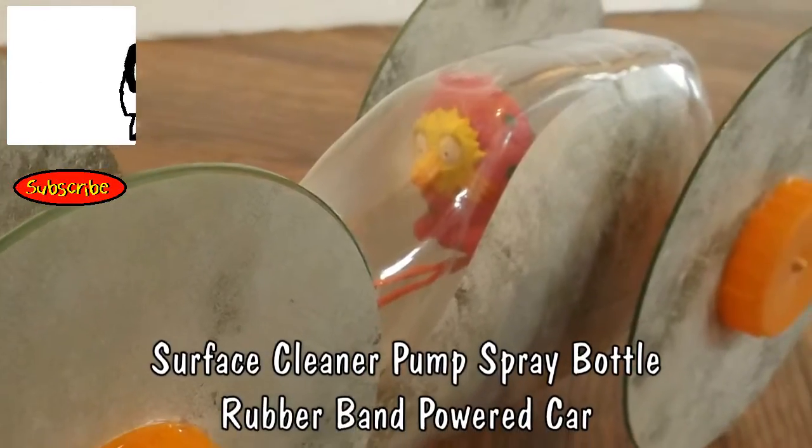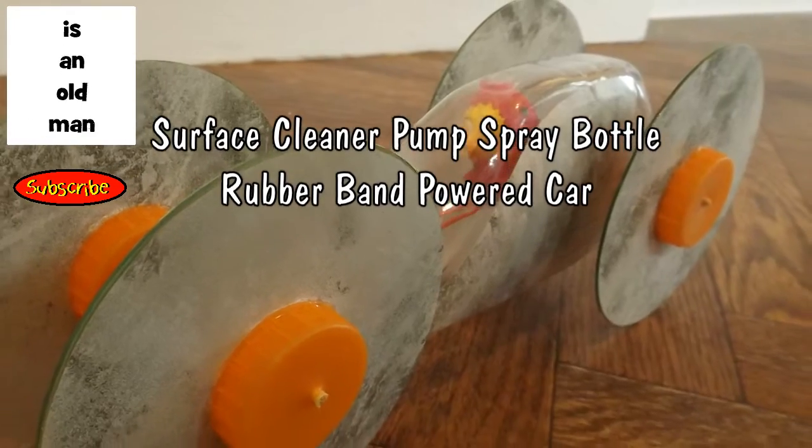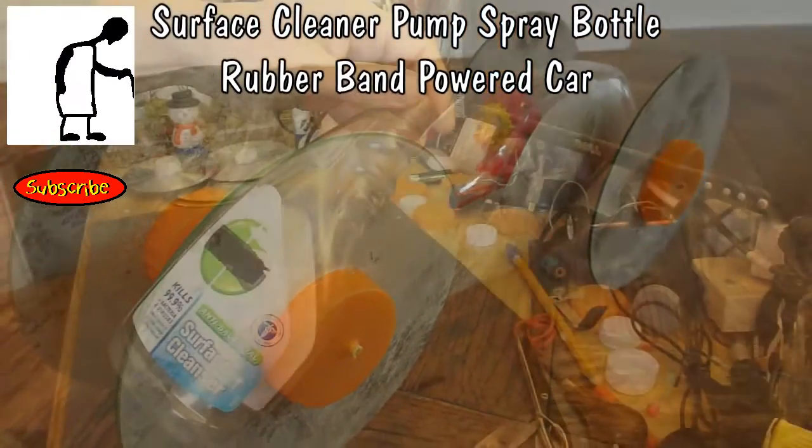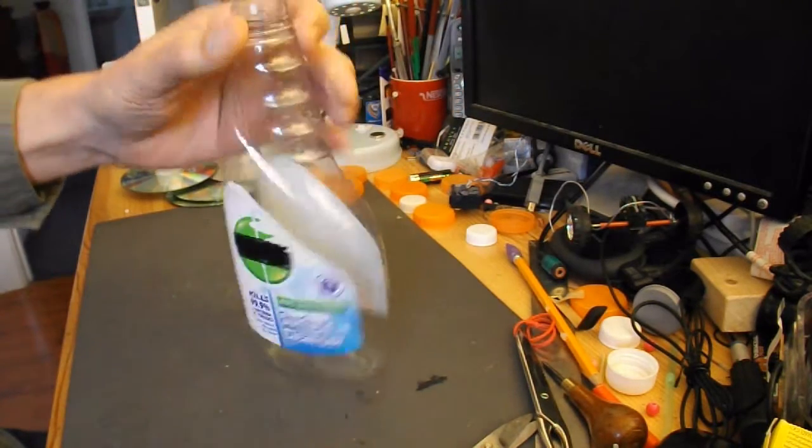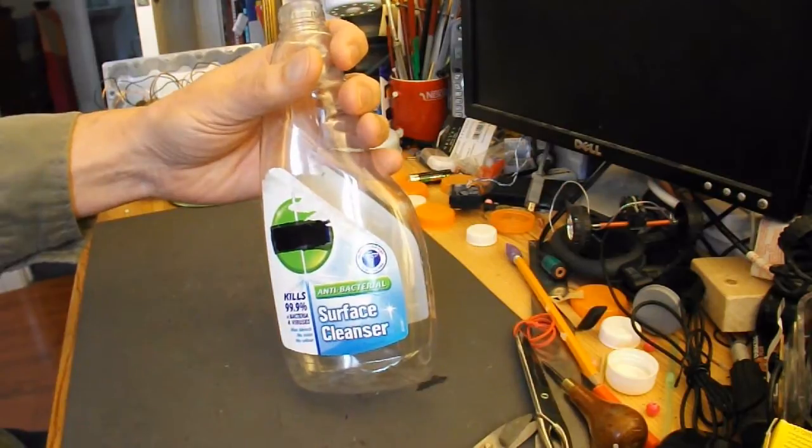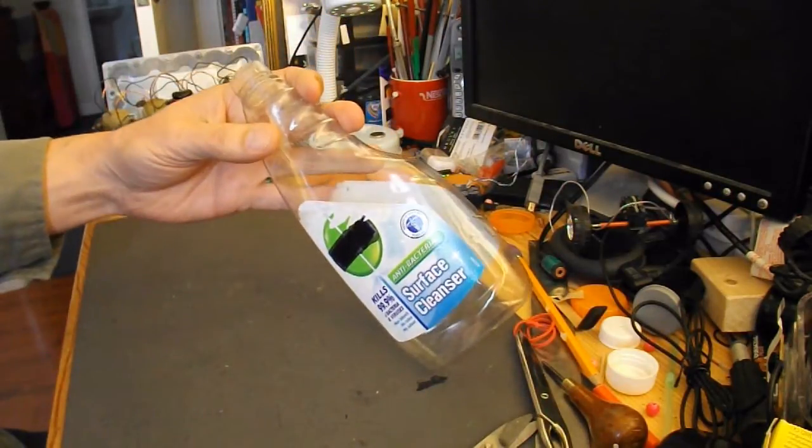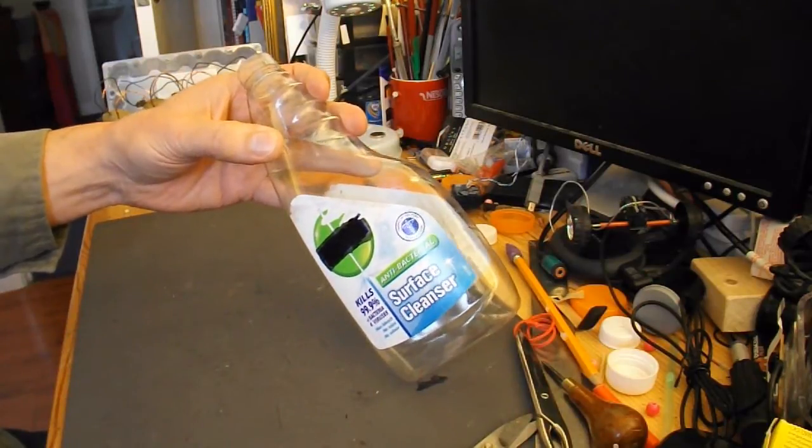Hi guys, I'm going to make a rubber band powered car out of this antibacterial surface cleanser bottle. It did have a pump on it which I used for something else and I'm going to use the bottle as the chassis for the car.